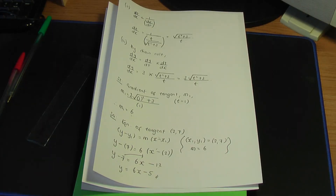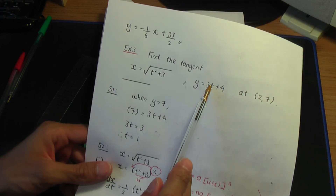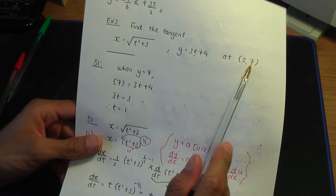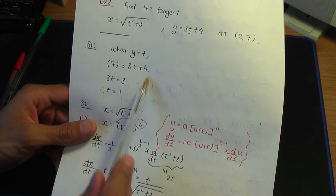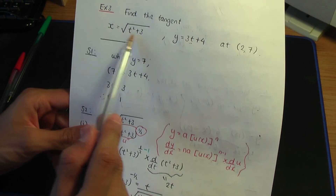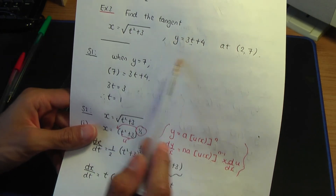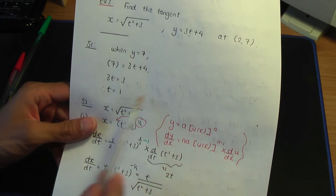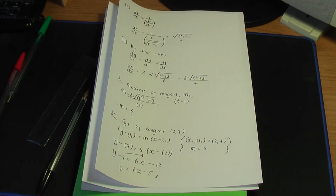That completes this example. This is the method to calculate the equation of the tangent given parametric equations with x and y coordinates. You need to find the parameter value first — by substituting the x or y value into one of your equations — before you can work out the gradient. I hope you found the video helpful. A like would be very much appreciated.